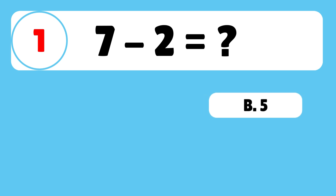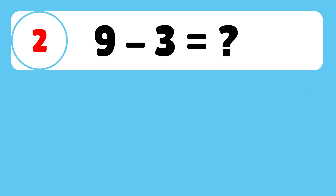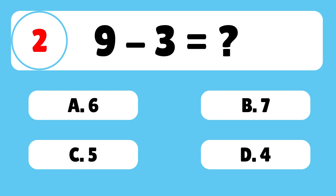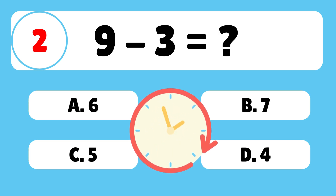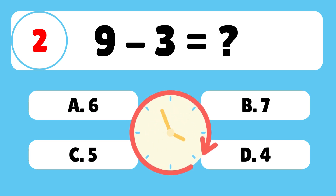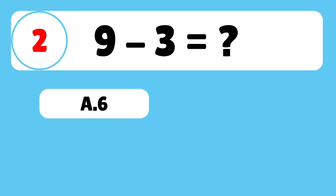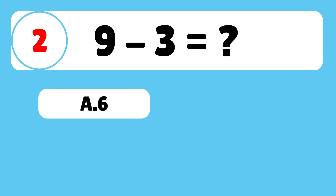Great work! Question 2: What is 9 minus 3? The answer is A. 9 minus 3 is equal to 6.